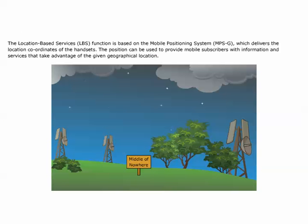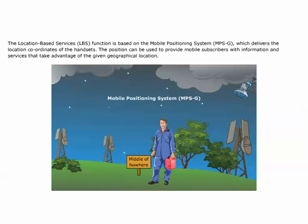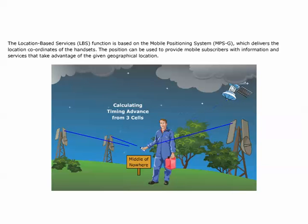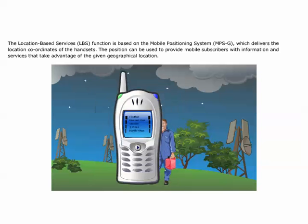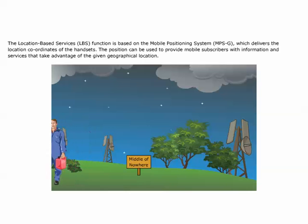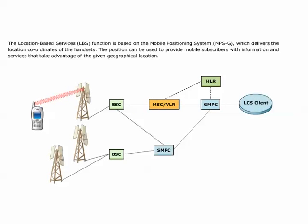The location-based services function is based on the Mobile Positioning System, MPSG, which delivers the location coordinates of the handsets. The position can be used to provide mobile subscribers with information and services that take advantage of the given geographical location. LBS works with all GSM handsets, enabling mobile operators to reach a mass market immediately. LBS provides a complete positioning portfolio, with components based on the latest standard interfaces and protocols. Cell Global Identity and Timing Advance and Assisted Global Positioning System, A-GPS, are the two positioning methods that are supported.